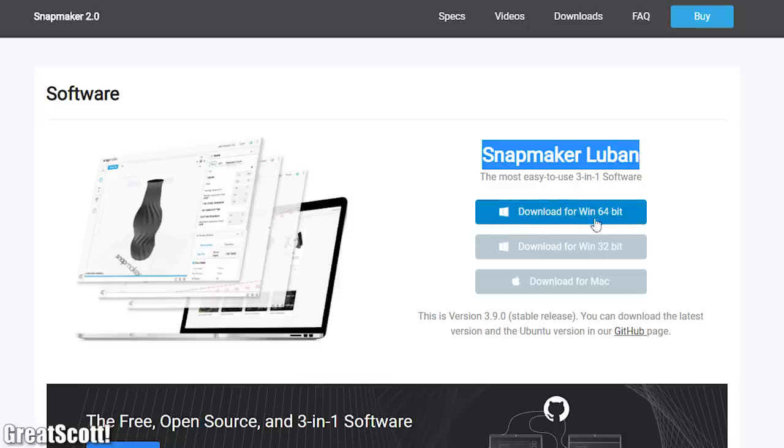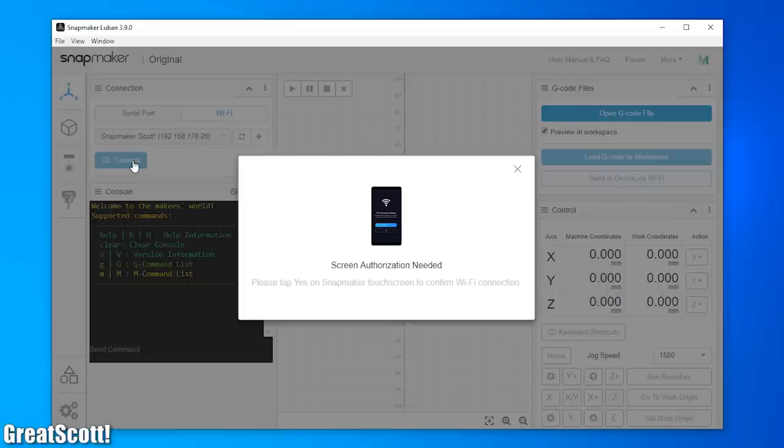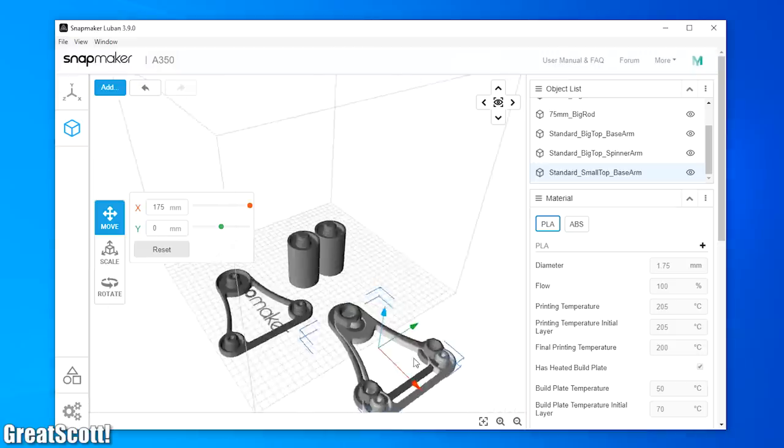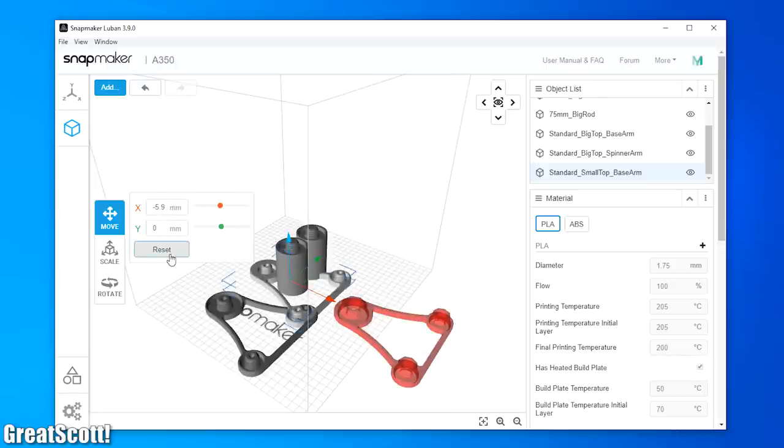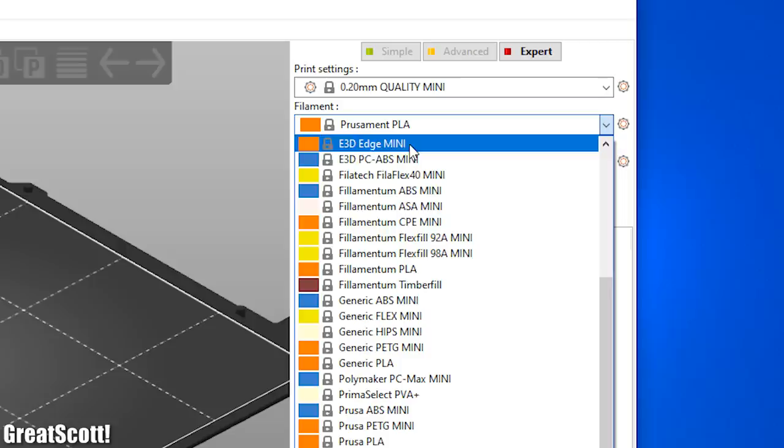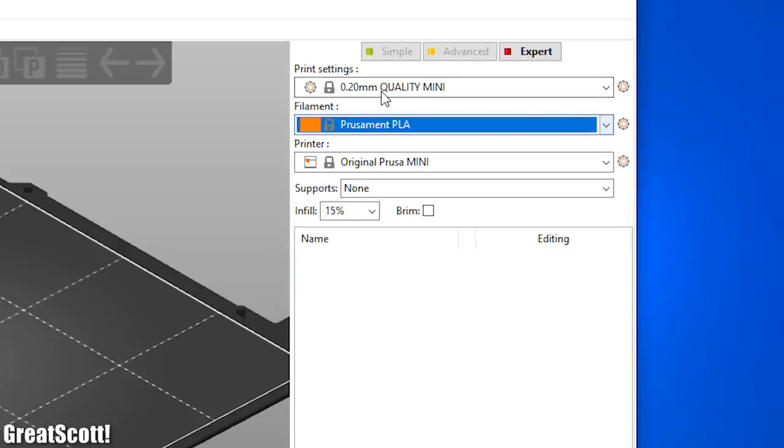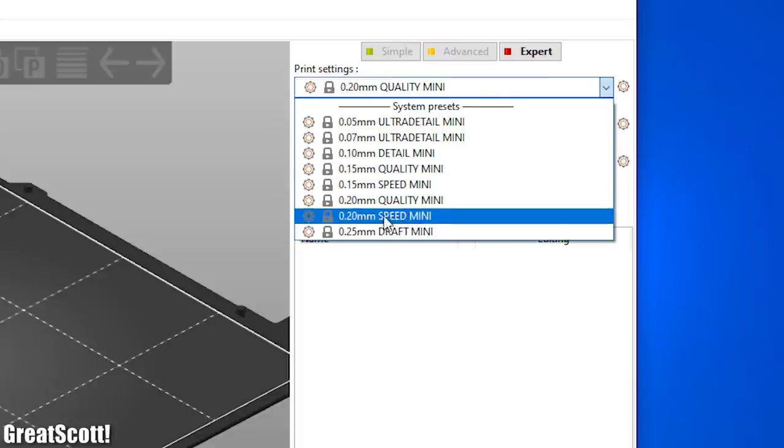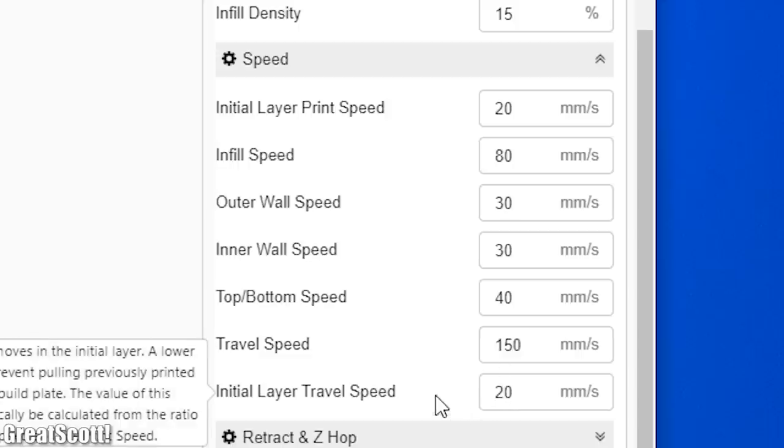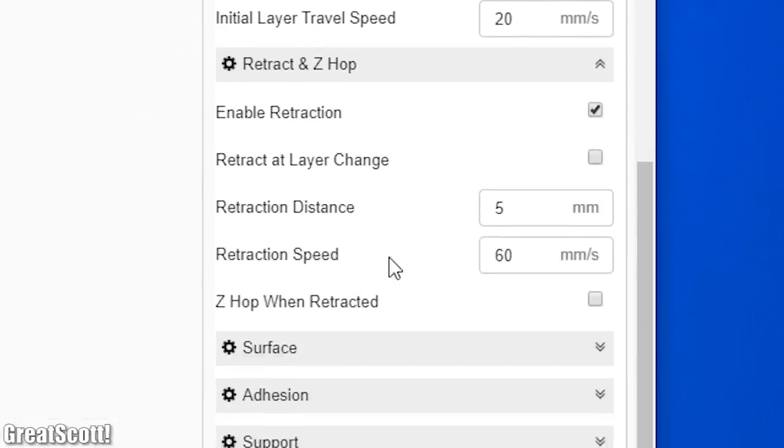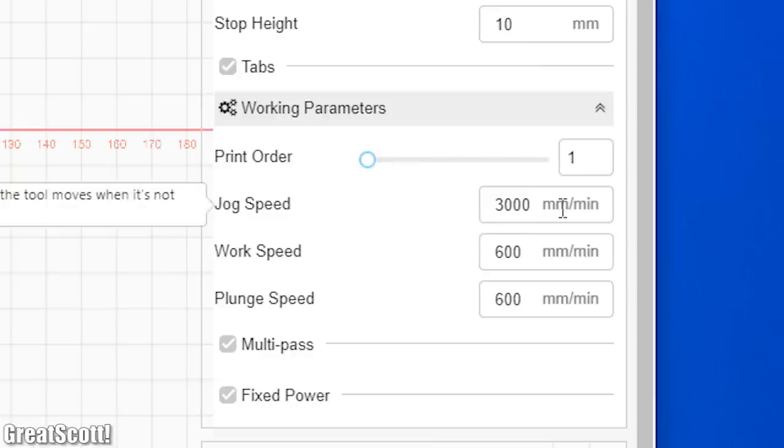Now it was finally time to download, install and start the Snapmaker software. And what I can say about it after testing the machine for around 30 hours is that it does work without any problems. But it is definitely not polished when it comes to user convenience. For example the PrusaSlicer software gives you lots of premade settings that you can easily use. While with the Snapmaker software you will have to enter the printing and filament settings all on your own. This is also the case for the laser engraving, cutting and CNC machining.